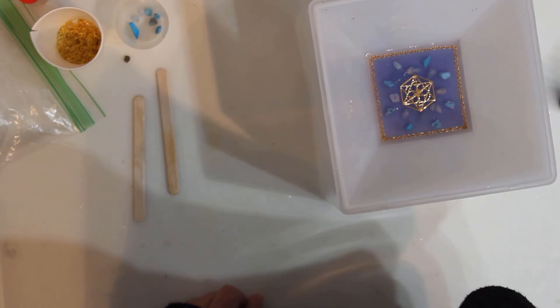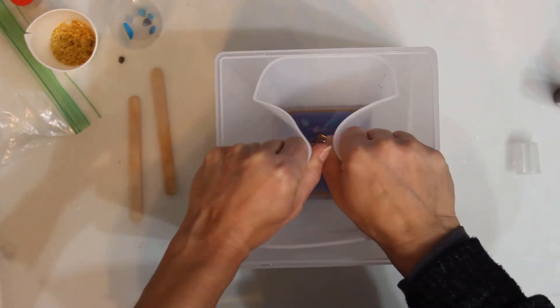And now I will let Jupiter cure in the mold for an additional 12 to 24 hours and then we can demold the organite.